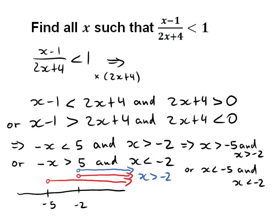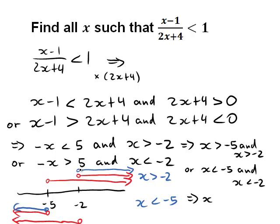For the second line: x less than negative 5 goes left from negative 5, and x less than negative 2 goes left from negative 2. The overlap is x less than negative 5. So the first line gives x greater than negative 2, and the second gives x less than negative 5, with an OR between them. The final solution is x in the interval from negative infinity to negative 5, excluding negative 5, union with the interval from negative 2 to infinity, excluding negative 2.